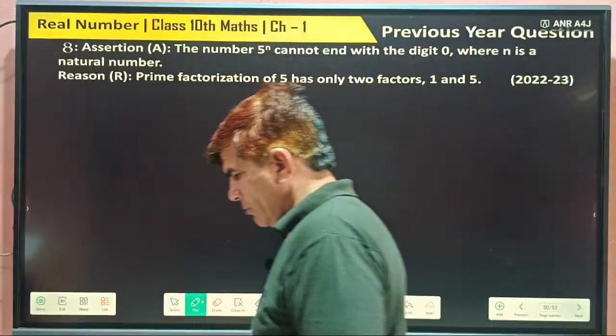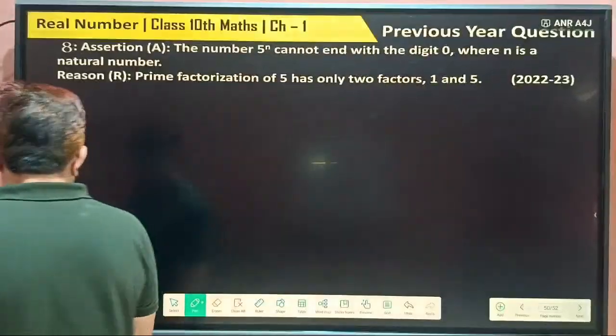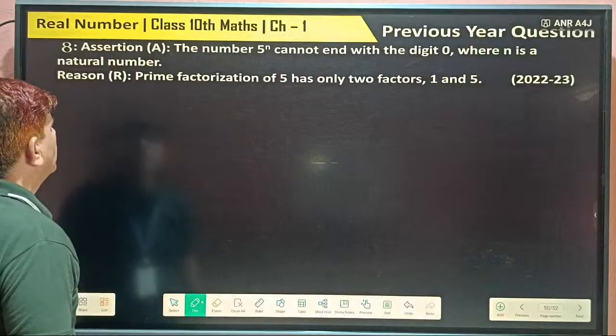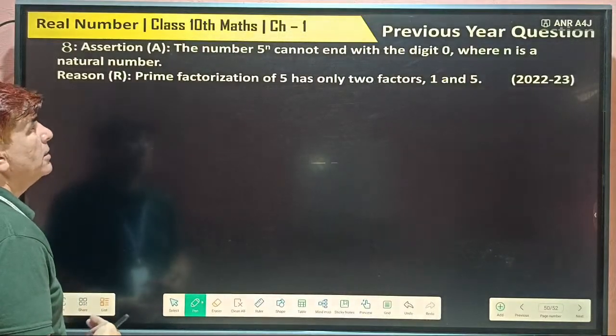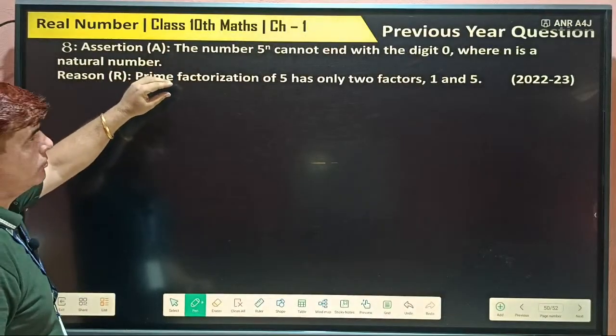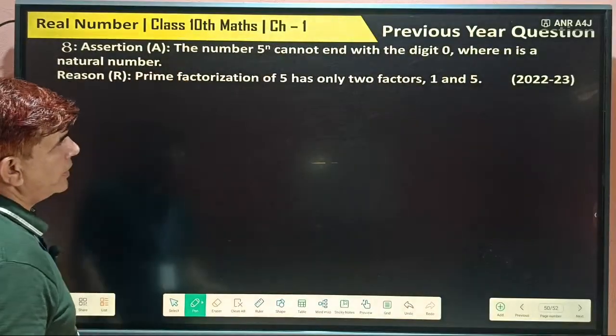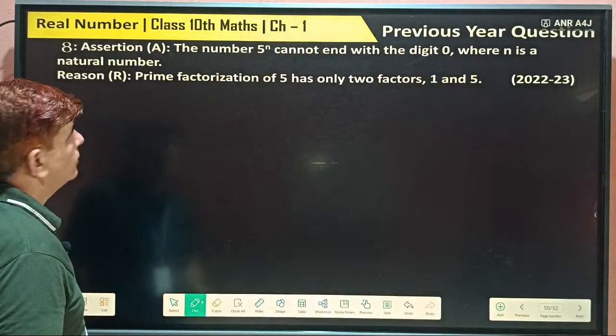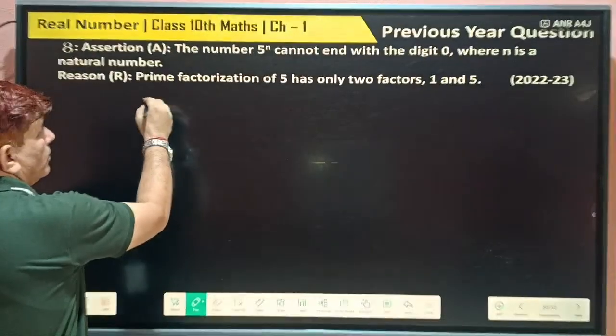Question number 8 given. What's given? Question based on assertion and reason. This is the question given, this is its reason given. The number 5^N cannot end with the digit 0, when N is a natural number.